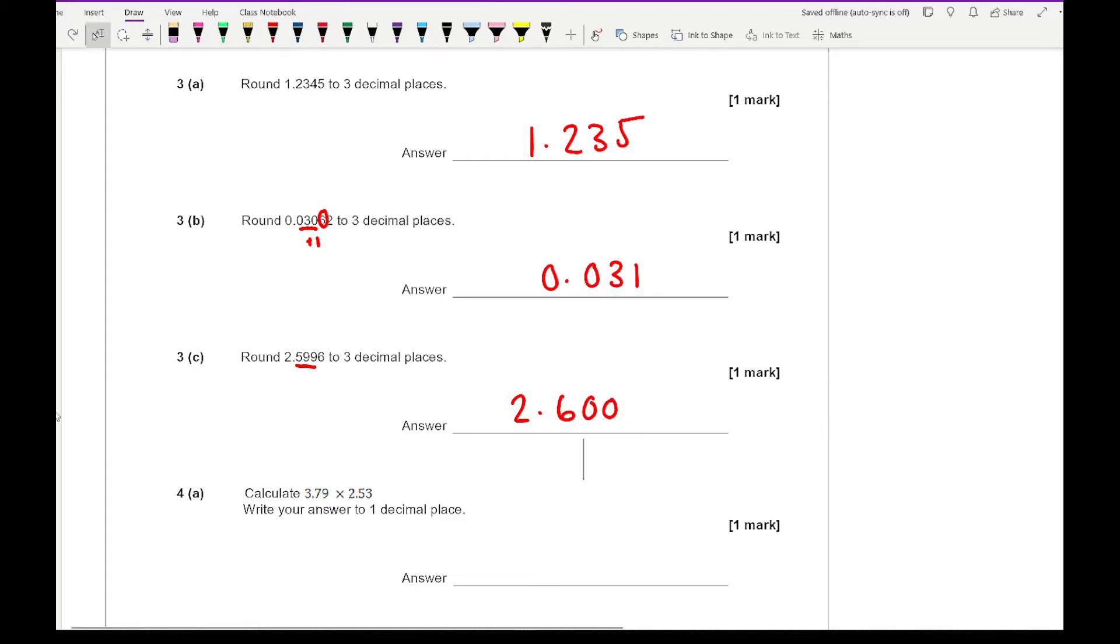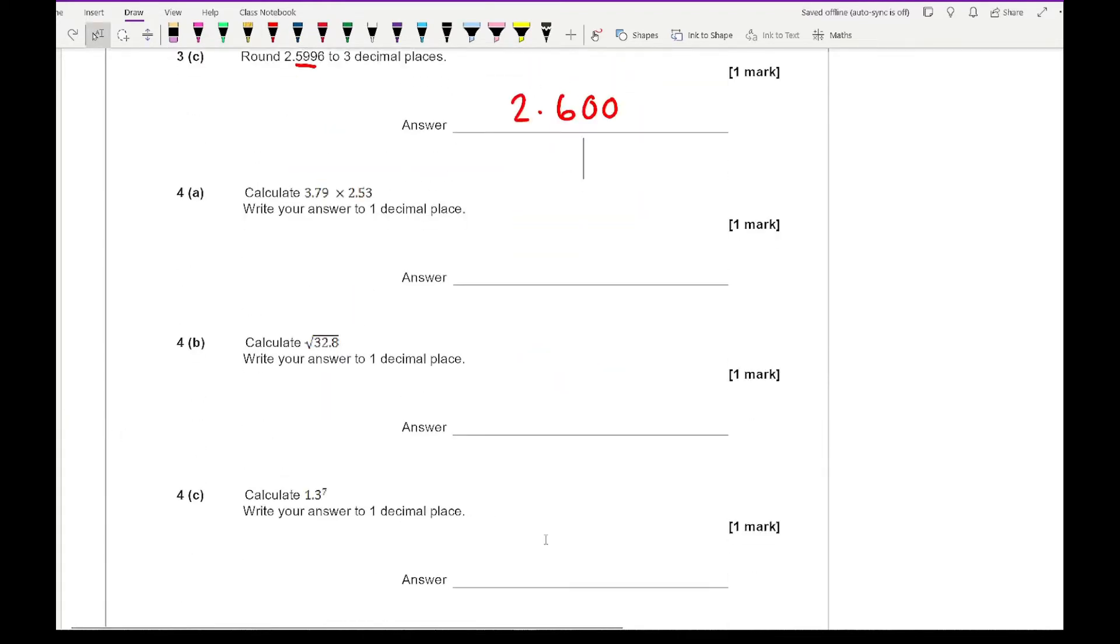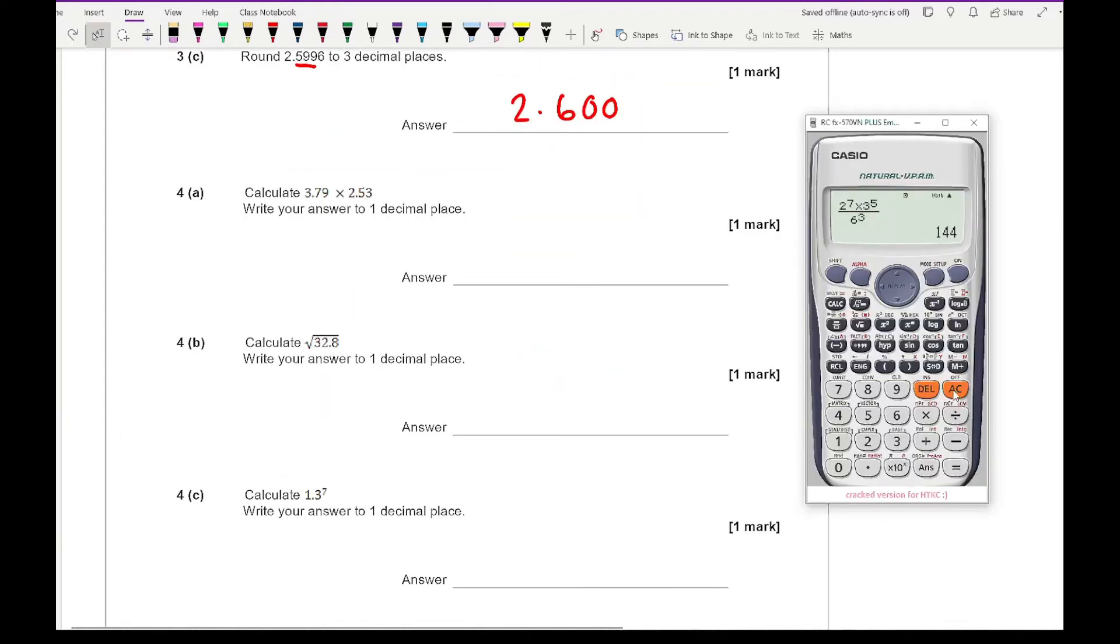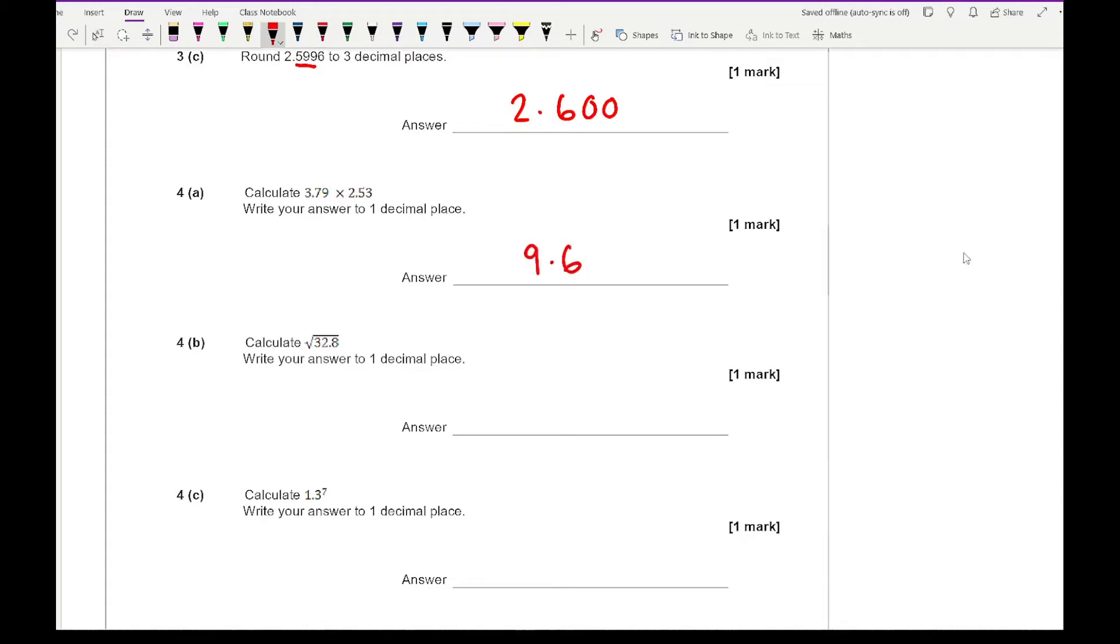For question 4, we actually do need to type this into our calculator, so let me load that up. I enter 3.79 multiplied by 2.53, press equals, and I'm going to round this number to 1 decimal place. Rounding that to 1 decimal place gives an answer of 9.6.